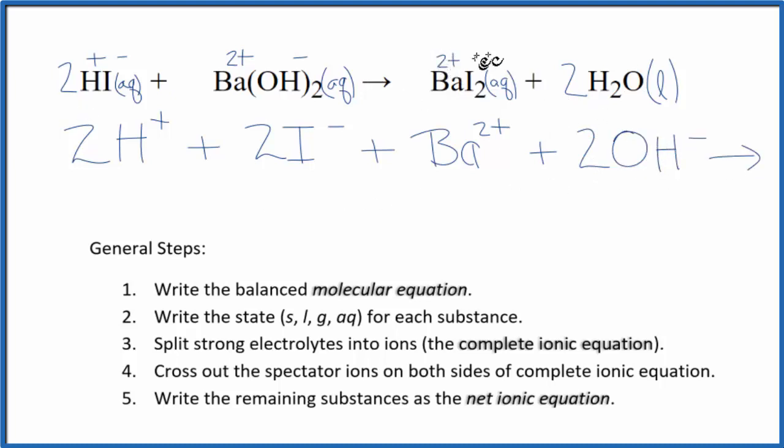We said barium is 2 plus, iodine 1 minus. So reactants, I have Ba 2 plus, that barium ion. And then I have two iodide ions. And then for net ionic equations, we do not split apart liquids. So we just have plus 2 H2O. So these are the products in our net ionic equation.